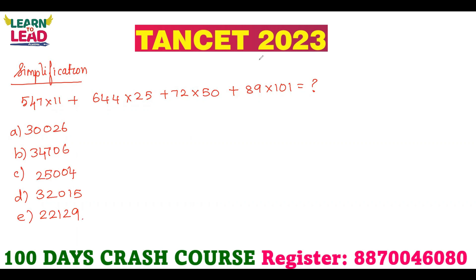In the basic concept, you should know what is BODMAS rule. BODMAS rule: first, brackets solve — that means off, division, multiplication, addition, subtraction. In the question, you need multiplication and addition. First preference: multiplication.